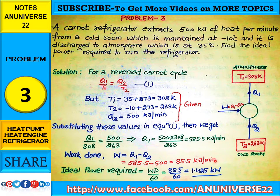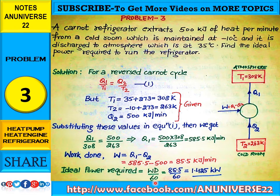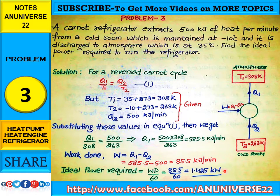If we divide it by 60, it becomes kJ per second, and kJ per second is equal to kW. So from here we can find the power. The ideal power required is work done divided by 60: 85.5 upon 60, which equals 1.425 kW.